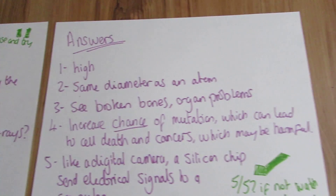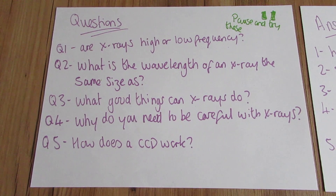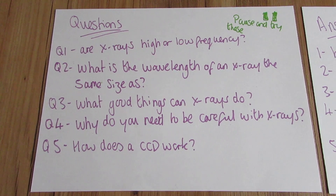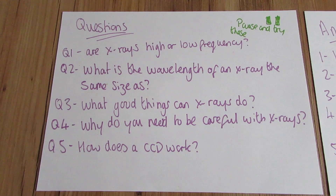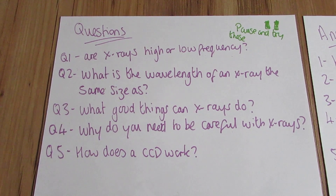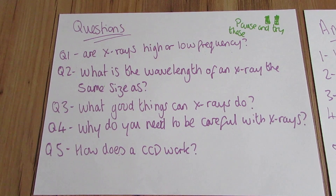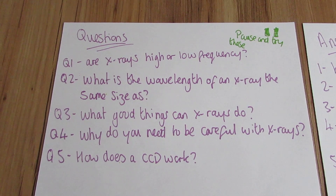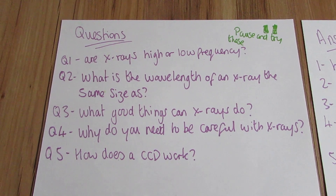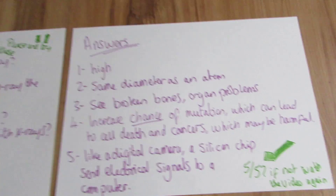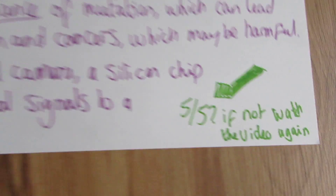If you've had a go at those now, here are the answers. Are x-rays high or low frequency? They are high frequency. What is the wavelength of an x-ray the same size as? It is the same diameter as an atom. What good things can x-rays do? They can see broken bones, they can diagnose organ problems, and they can treat cancer. You need to be careful with x-rays because they can increase the chance of mutation, which can lead to cell death and cancer, and can be harmful. And a CCD works like a digital camera — a silicon chip sends an electrical signal to a computer. Here are the answers again for you. I hope you got five out of five. If you didn't, watch the video again.